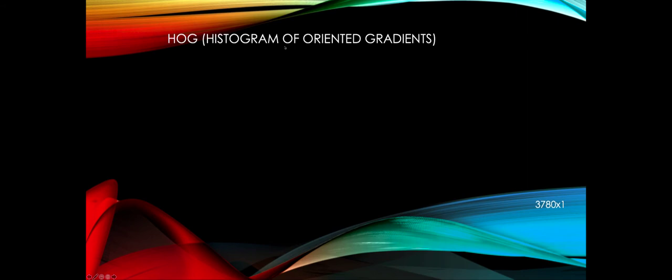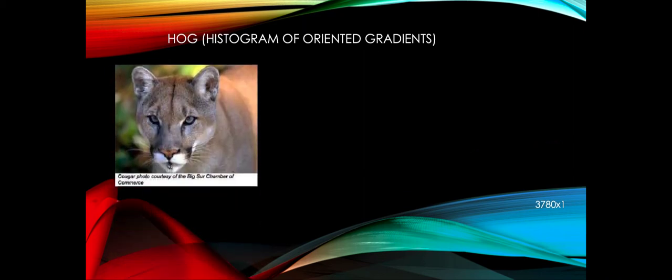Let's learn about Histogram of Oriented Gradients, also known as HOG descriptor. As we saw in our previous coding example, HOG descriptors is the process of converting our image into a feature vector, which is required for the machine learning algorithm — in this particular case, SVM.